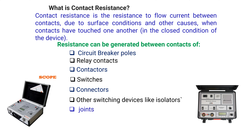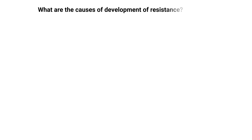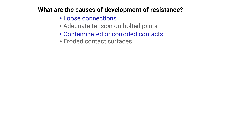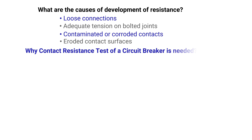Resistance can be generated between contacts of circuit breaker poles, relay contacts, contactors, switches, connectors, and other switching devices like isolators, joints, cable connections, bus bar sections, etc. The causes of development of contact resistance include loose connections, inadequate tension on bolts, contaminated and corroded contacts, and eroded contact surfaces.